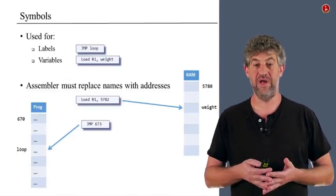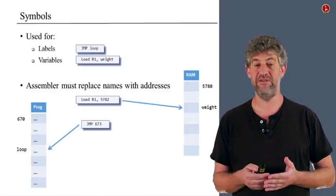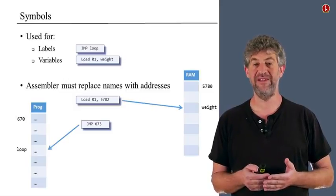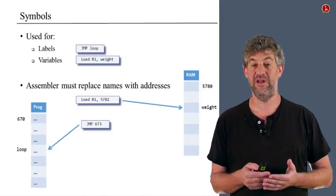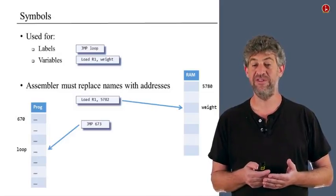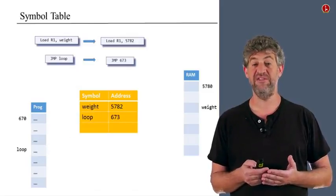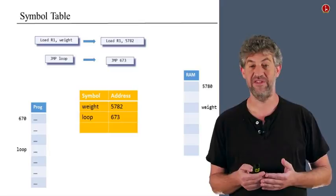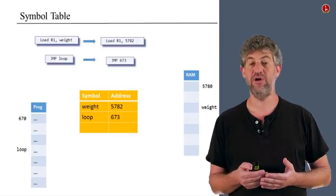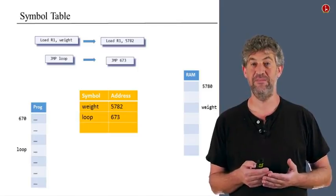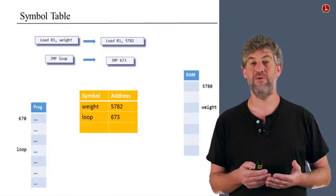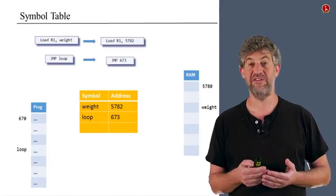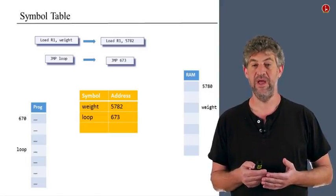For example, we can write "jump loop" and "loop" is automatically translated into some kind of address. Similarly, we can load a variable called "wait" into a register, and "wait" is going to be some location in memory that the assembler figures out. Basically, our assembler will have to replace each symbol — like "wait" — with its equivalent address, remembering where exactly that address is in memory. It does this using a table that maps symbols to actual addresses.